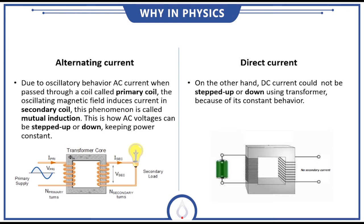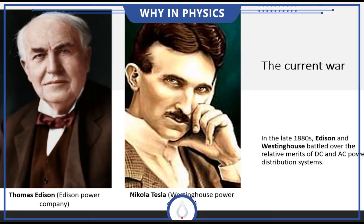The other thing is the current war. In the 1880s, Thomas Edison's Edison Power Company and Nikola Tesla's Westinghouse Power Company battled over the relative merits of power distribution systems. Thomas Edison on the left hand was in favor of DC current and his power company Edison Power Company was promoting the DC current over New York City.